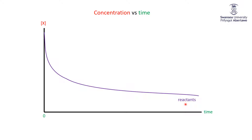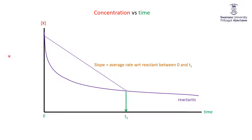The rate of the reaction is the slope of this line, but there are an infinite number of possible slopes we could choose. We would have to specify not just the slope but something special about it. For example, consider a random time T1. We could take the slope of the line from the start of X going down to T1 — that's a straight line, and we can define its slope. That slope is a rate, and it would be the average rate with respect to the reactant between time zero and T1.